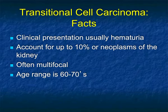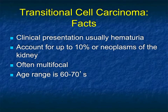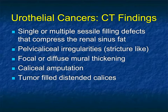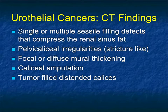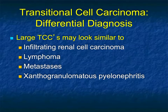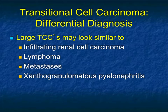Transitional cell carcinoma: classic presentation accounts for about 10% of tumors. Unlike renal cell, it's often multifocal — kidney, ureter, bladder, or contralateral kidney. Age is a little older but not much different from renal cell, typically in the 60s and 70s. Appearances include single or multiple sessile filling defects that compress the renal sinus fat, pelvic-calyceal irregularities often stricture-like, focal or diffuse mural thickening, calyceal amputation, and tumor-filled distended calyces. When TCC gets large, the challenge is distinguishing it from hypovascular RCC, lymphoma, metastasis, or even infection like XGP.